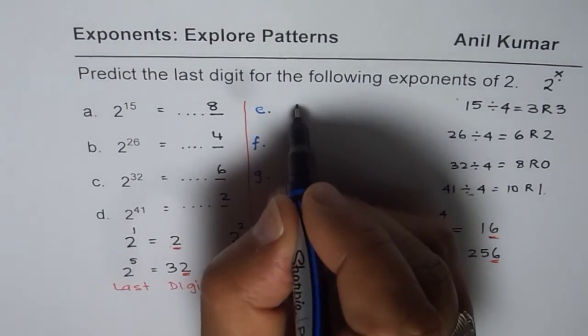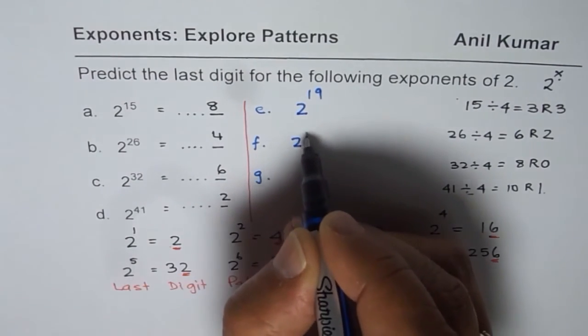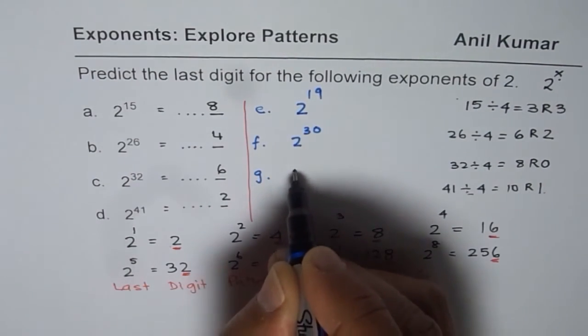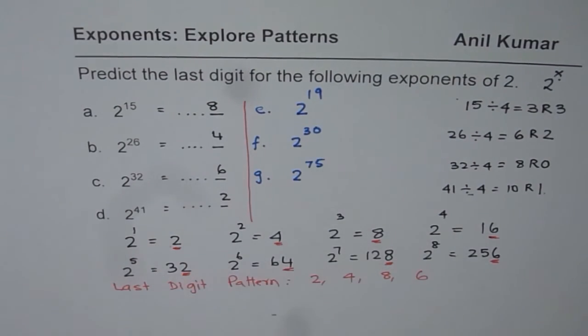Let me give you some numbers here. 2 to the power of 19, 2 to the power of 30, 2 to the power of 75. Find the last digit for these exponents of 2. I hope that helps. You can look into similar videos of mine. We'll explore more patterns with such numbers. Thank you and all the best.